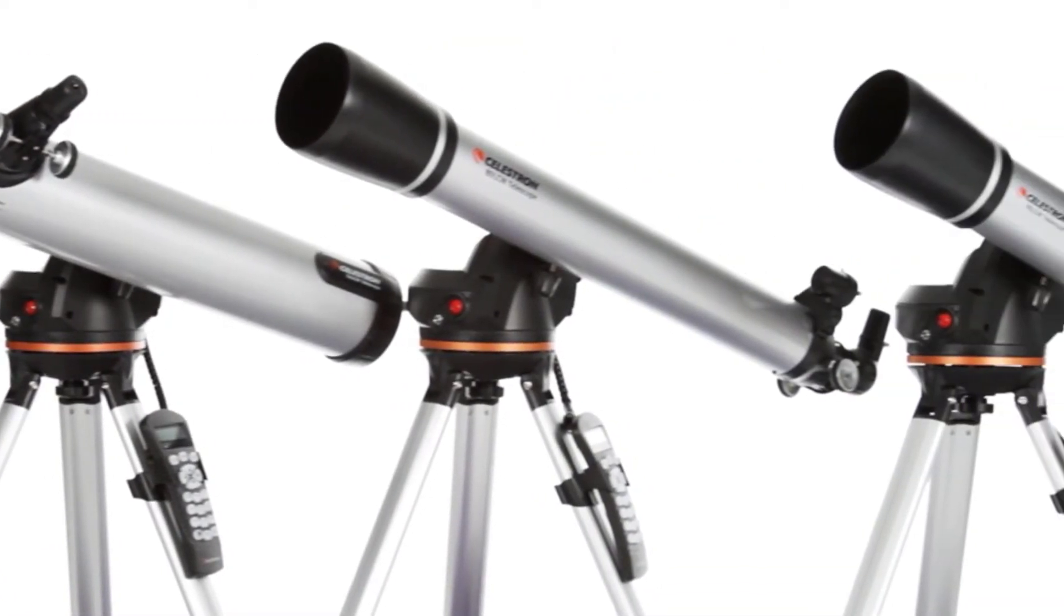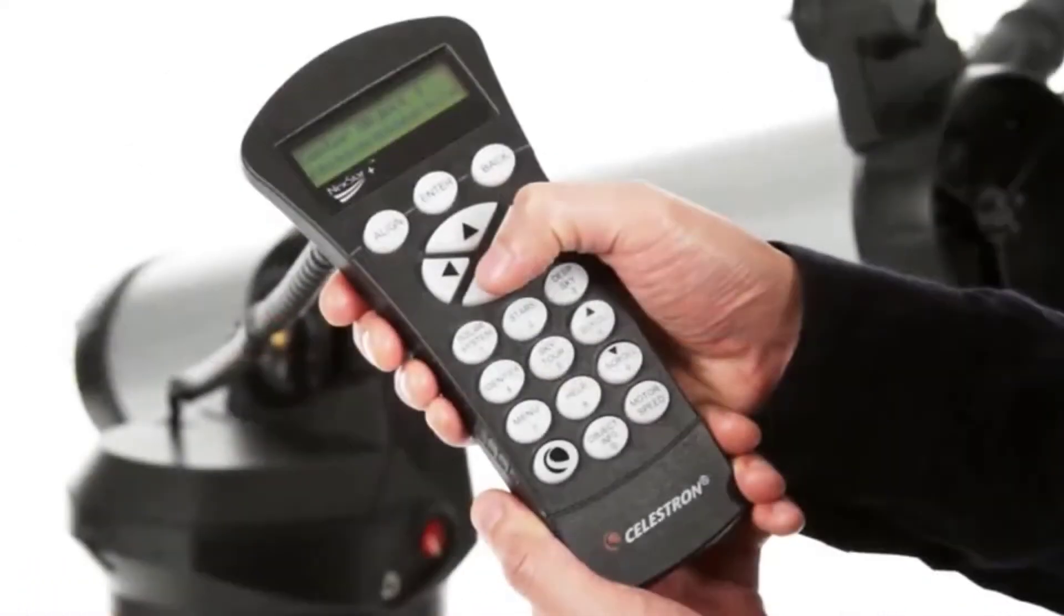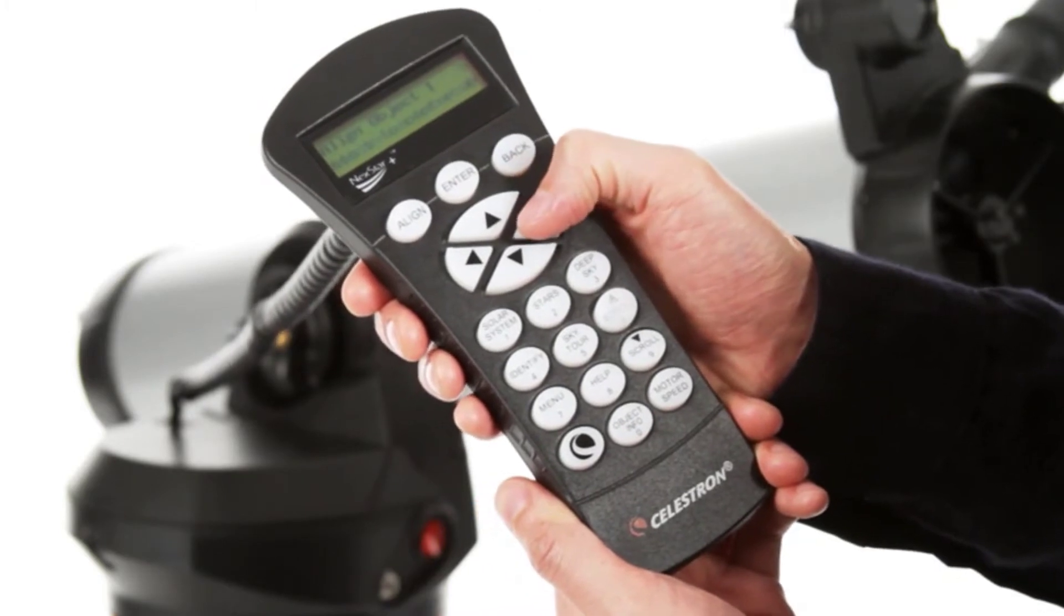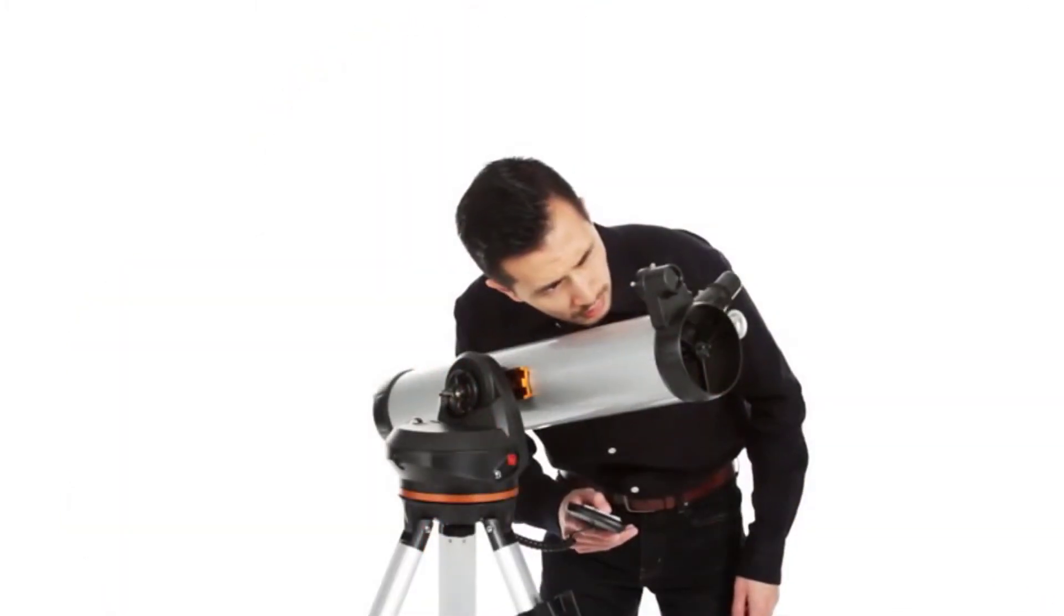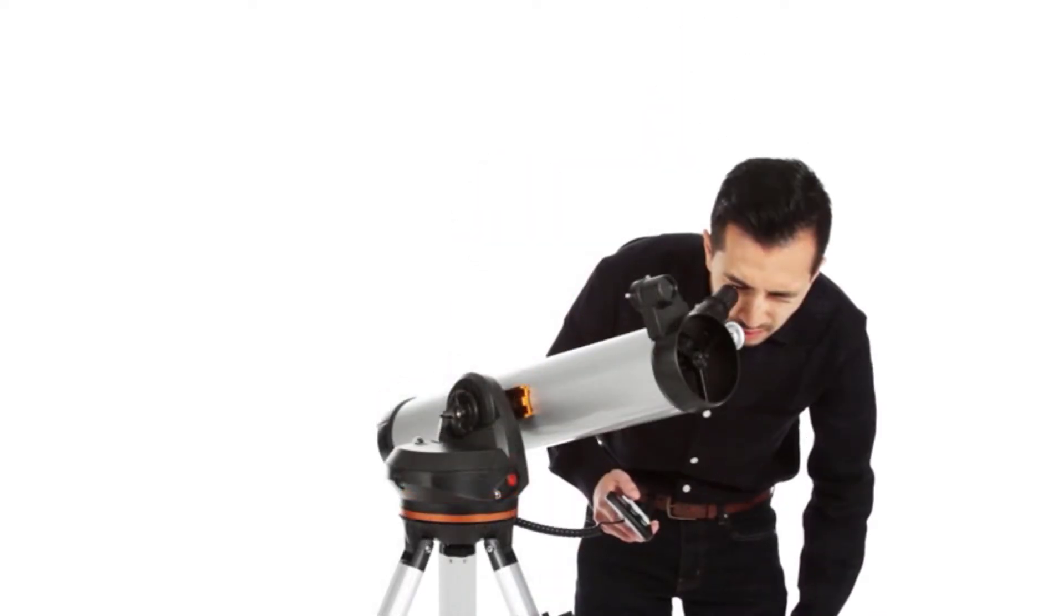The LCM part of the name stands for lightweight computerized mount, which helps you locate thousands of objects in the sky. On the tripod, there is a hand control with a database that allows you to select whatever object you're looking for. The telescope then finds it in the sky, centering it in the eyepiece for your viewing pleasure.